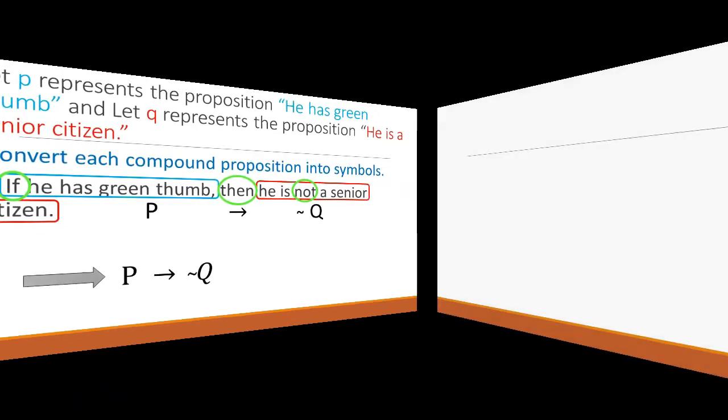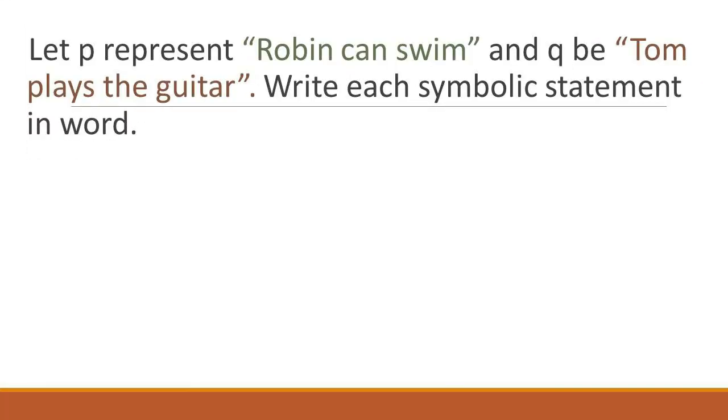Now, we will write each symbolic statement in words. Let P represent 'Robin can swim' and Q be 'Tom plays the guitar.'